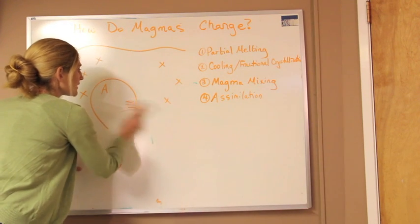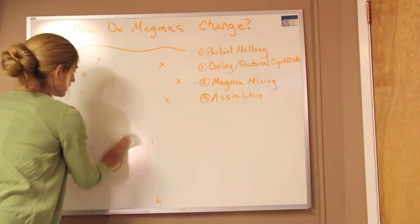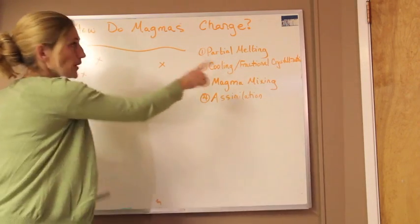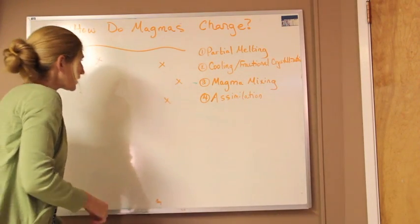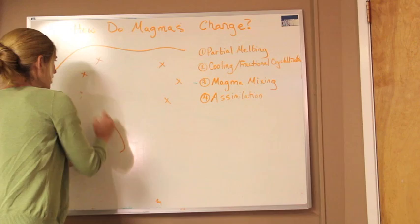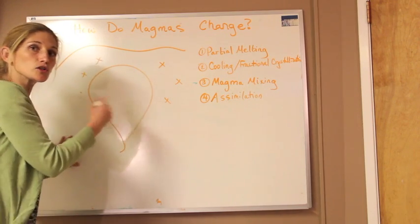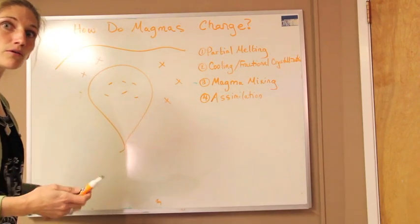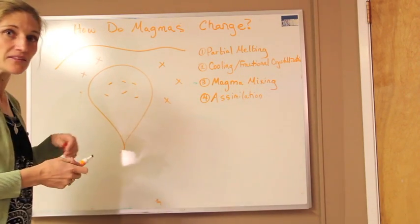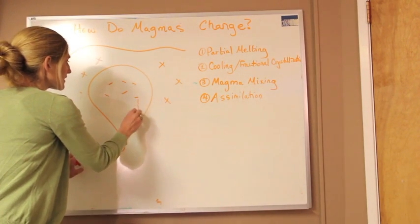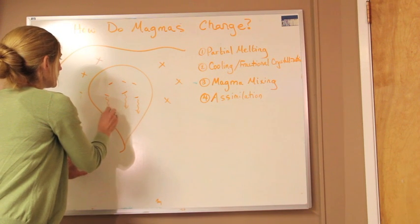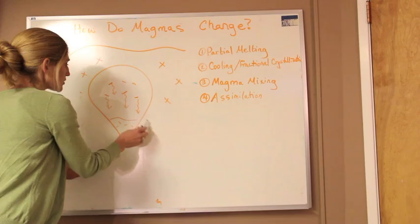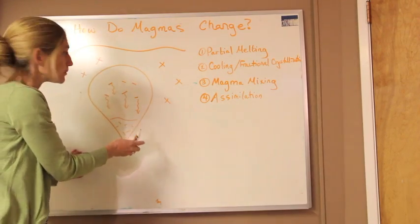The next thing that can start to happen is fractional crystallization. So if we have that blob of magma and it starts to cool and crystallize out different mineral crystals, those different mineral crystals are denser than the magma that they're sitting in. They're going to start to sink down in the magma and eventually accumulate at the bottom, cool and crystallize, and turn into a rock.